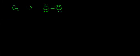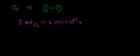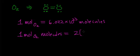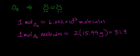One mole of oxygen molecules — one mole of O2 — has 6.022 times 10 to the 23 molecules of O2. One mole of O2 molecules has a mass of: since there are two oxygen atoms in each molecule, and each atom has a mass of 15.99 grams, one mole of O2 molecules has a combined mass of 31.98 grams.